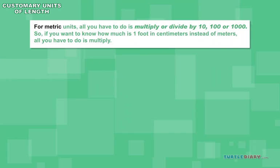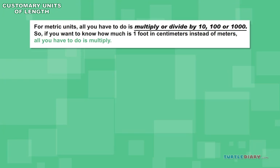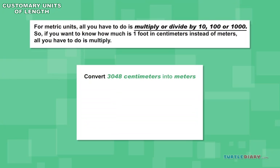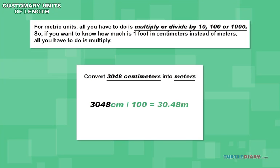For metric units, all you have to do is multiply or divide by 10, 100, or 1,000. So if you want to know how much is 1 foot in centimeters instead of meters, all you have to do is multiply. Example: Convert 3,048 centimeters into meters. 3,048 centimeters divided by 100 equals 30.48 meters.